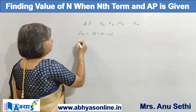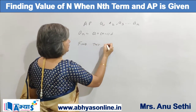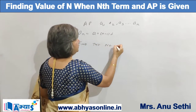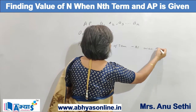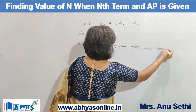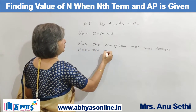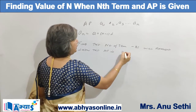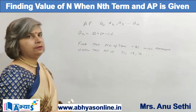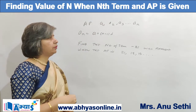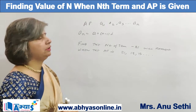For example, we are given an AP. Find the number of terms — that is, find which term is equal to -81 — when the AP is 21, 18, 15, and so on. We are supposed to find the value of n for which the term will be -81.